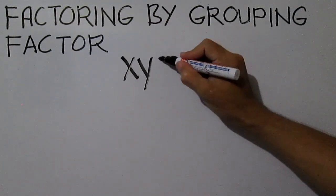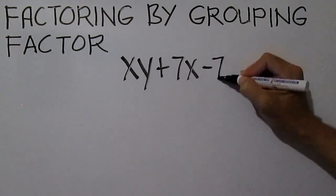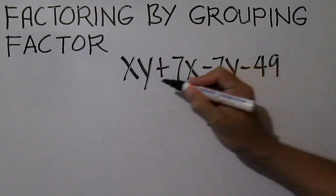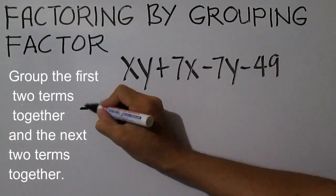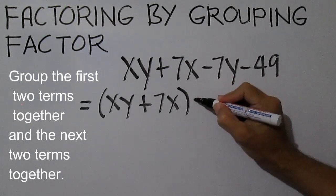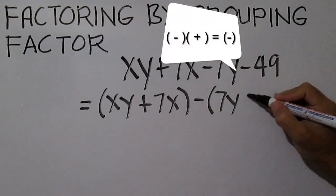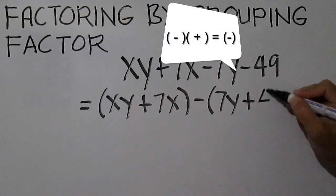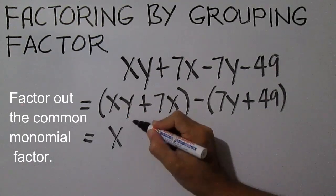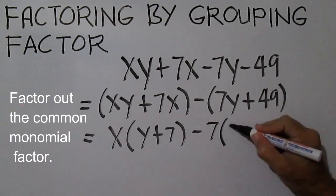Factor XY plus 7X minus 7Y minus 49. Group the first two terms together and the next two terms together: the quantity XY plus 7X, minus the quantity 7Y plus 49. Don't forget to change the subtraction symbol to addition. Next, factor out the common monomial. X, and the other factor is Y plus 7. For 7Y plus 49, the common monomial is 7, and the other factor is Y plus 7.